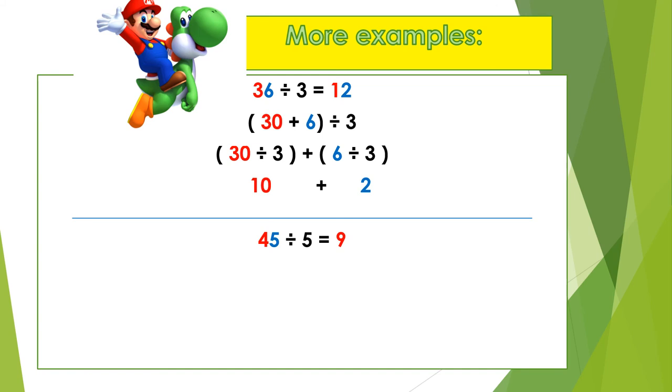Let's look at the next example. 45 divided by 5 is equal to 9. 45 is decomposed into 40 plus 5 divided by 5. 40 divided by 5 plus 5 divided by 5. Now let's work out the sum within the brackets. 40 divided by 5 is 8, and 5 divided by 5 is 1. Both answers are added together to give you a final answer. 8 plus 1 is 9. So 45 divided by 5 is equal to 9.